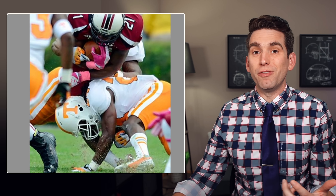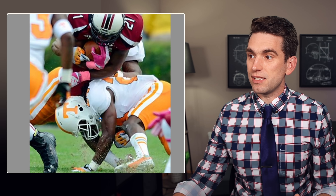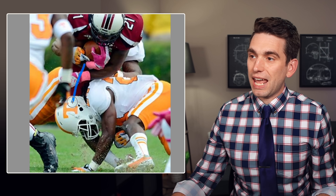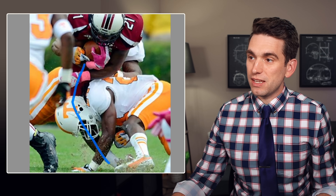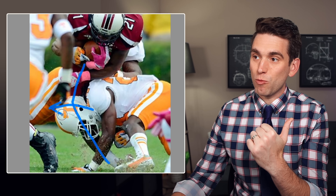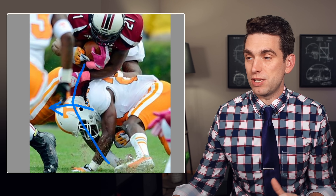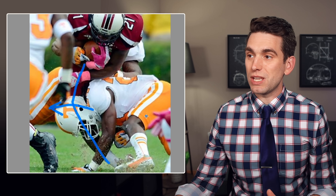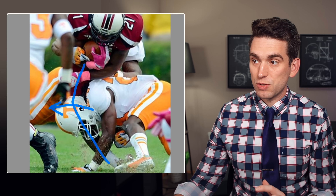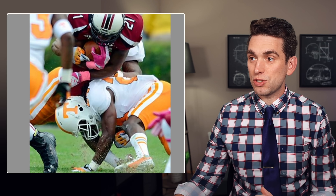There also was a significant amount of forced varus alignment. Here we can see the Tennessee defender coming in — look at the angle of Lattimore's leg. His leg is being forced outward, and that's varus positioning. When the knee goes inward, that's valgus; when it's outward, that's varus. So this is going to stretch everything located on the outside of his knee.